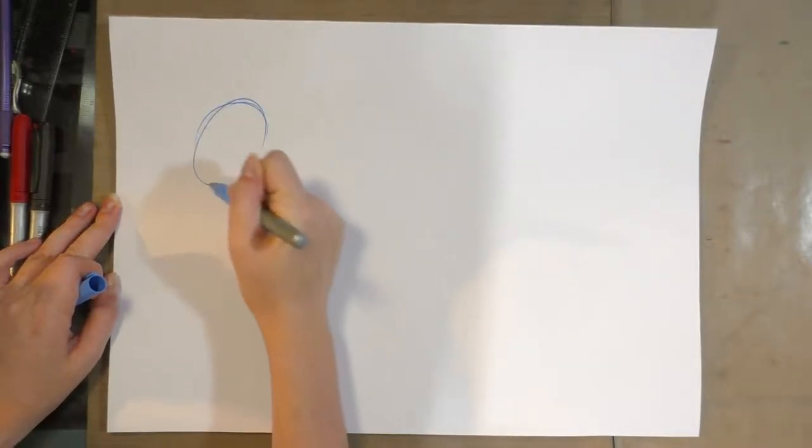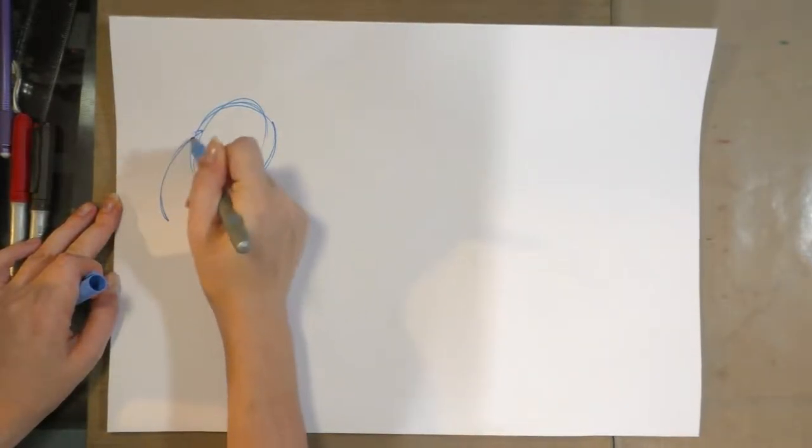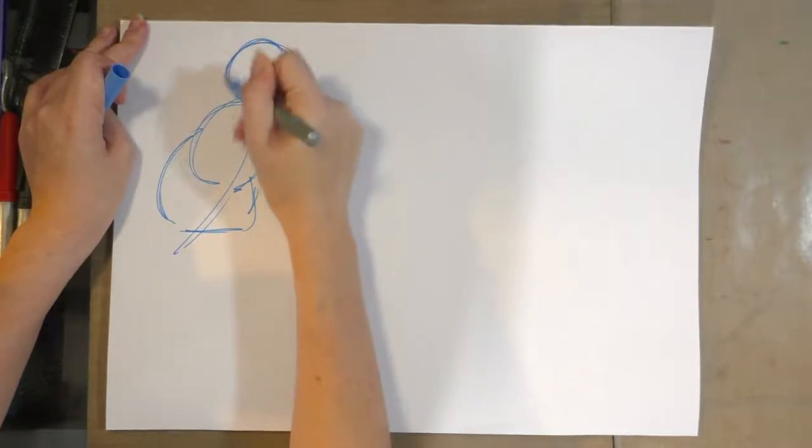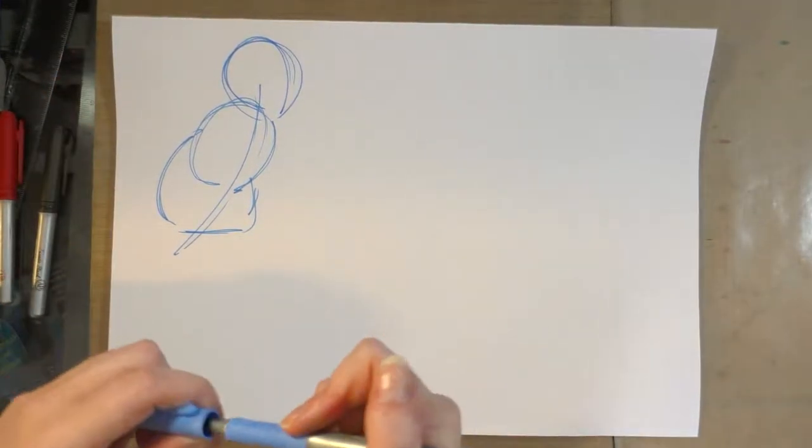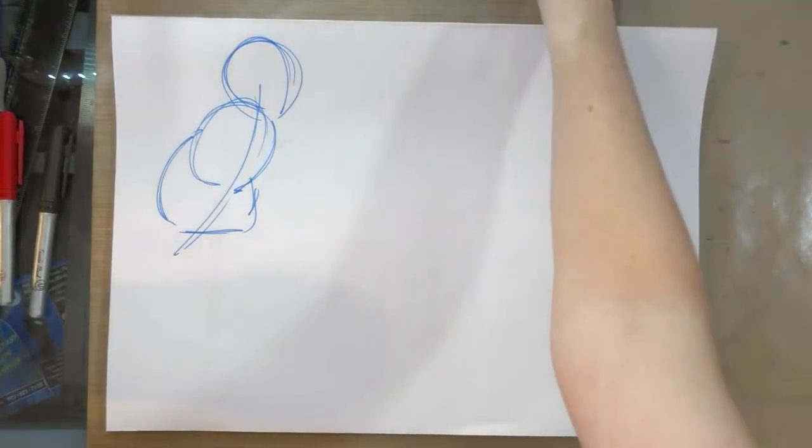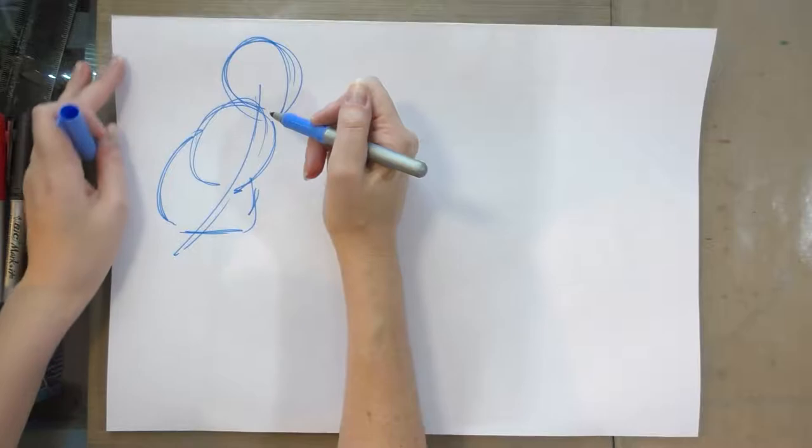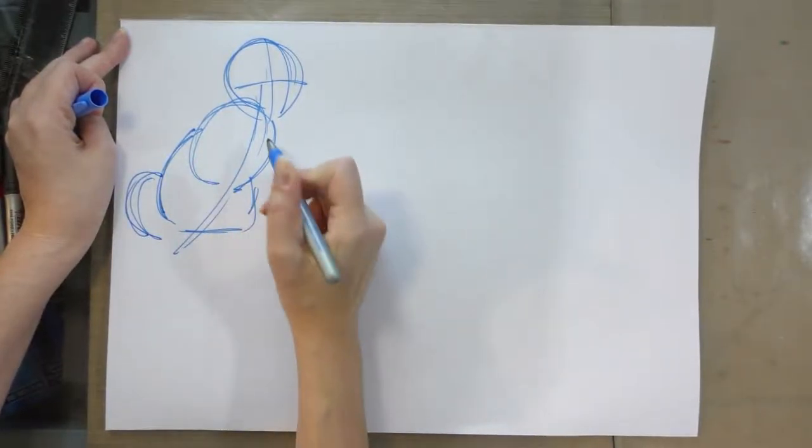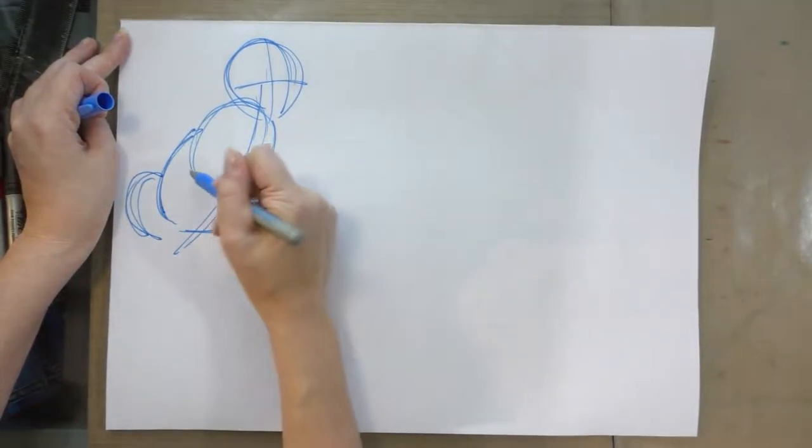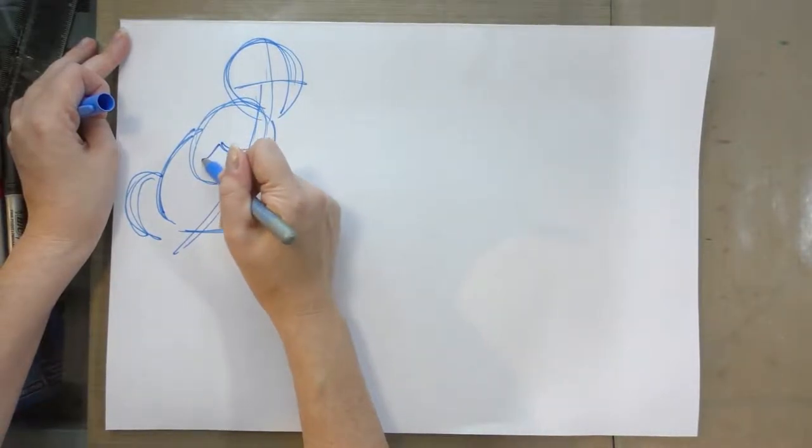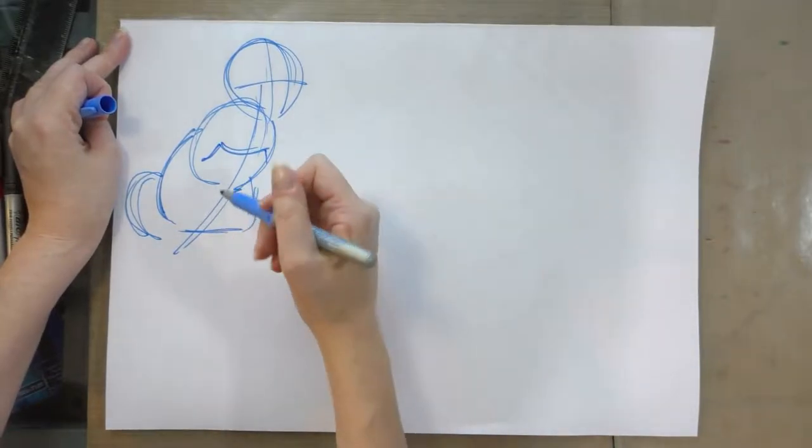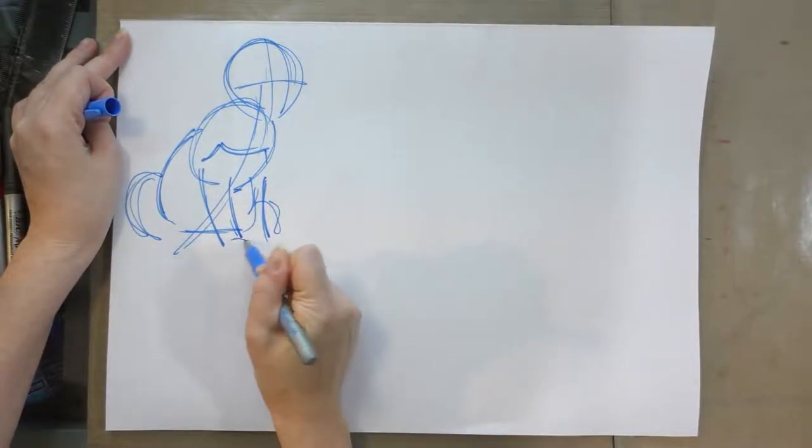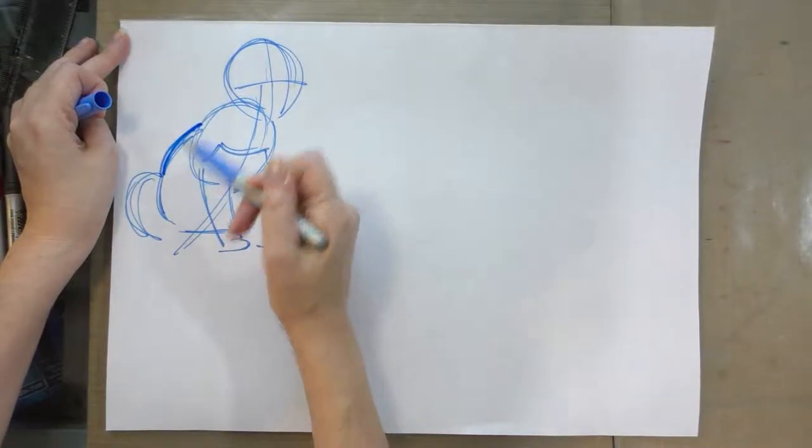The first thing I'm going to do is start with kind of jelly bean anatomy, where I use round amorphic shapes to start gesturing it in. I find for cats, using jelly bean anatomy is the best method to go about breaking down their anatomy. So I'm not as concerned with where's the rib cage or where's the pelvis.